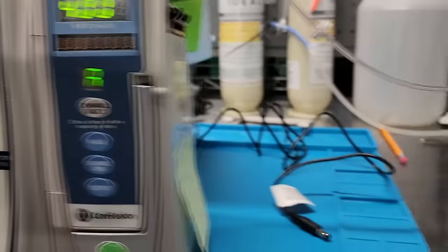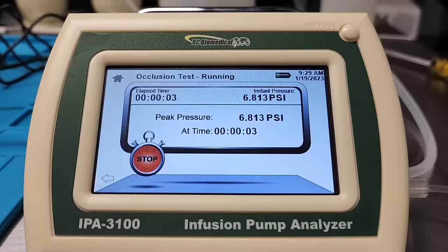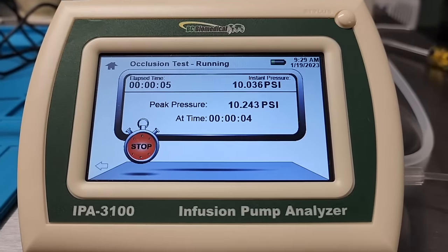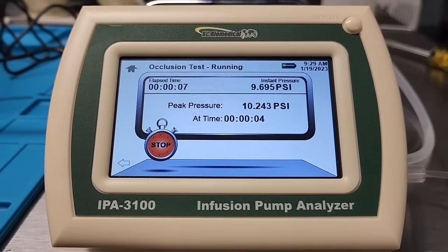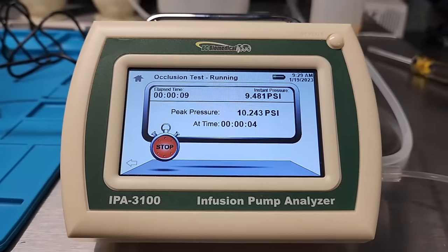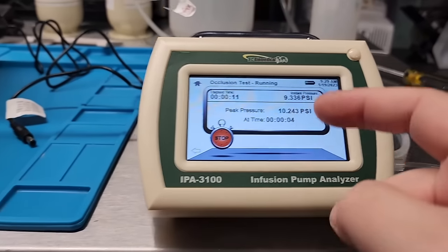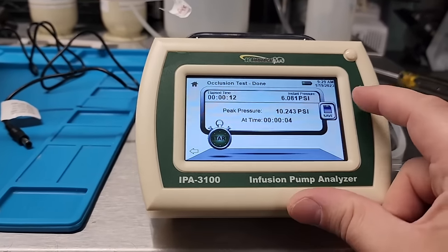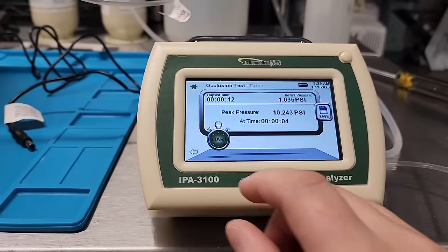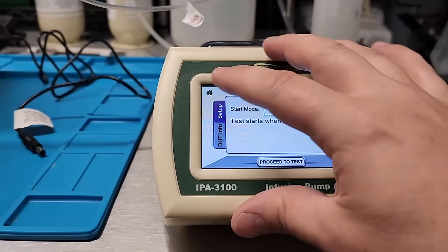Okay, here it goes. It's clicking down. Our pressure is building quite quickly. There we go. 10.2 was the pressure that it ran at. I'm going to stop it. So it's going to save that result to our record. Pretty cool.